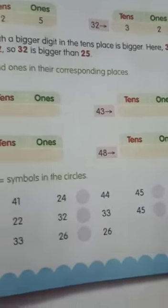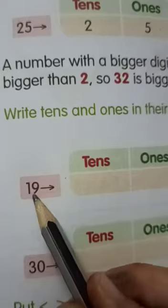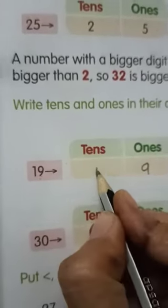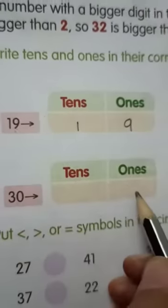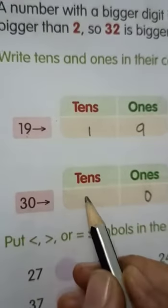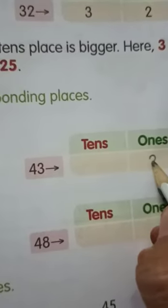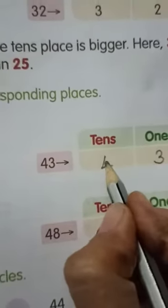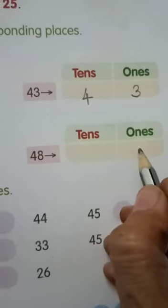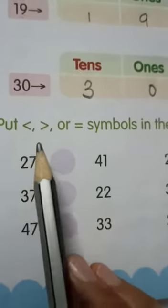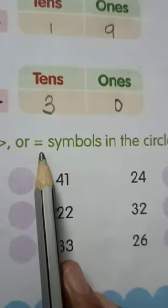Now this is your textbook, page number 67. In number 19, the 9 is on the 1's place and 1 is on the 10's place. In number 30, 0 is on the 1's place and 3 is on the 10's place. In number 43, 3 is on the 1's place and 4 is on the 10's place. In number 48, 8 is on the 1's place and 4 is on the 10's place. Now we have to put the sign: less than, greater than, or equals to.